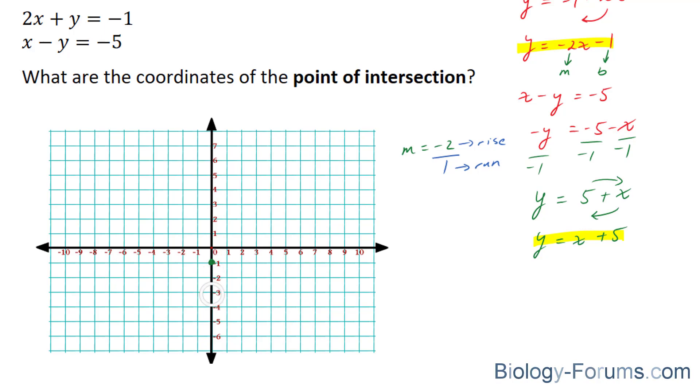What this means is that from this point, you're going to rise negative 2 and run once to the right. Rise of negative 2, meaning you go down 2 and you run once. This is positive, so you go to the right. And you can stop right there.